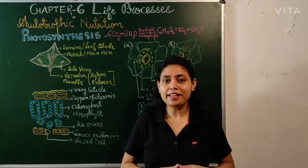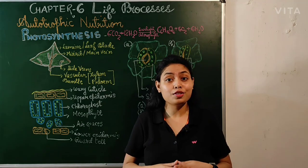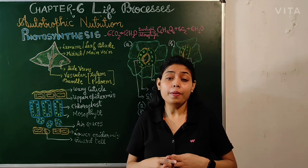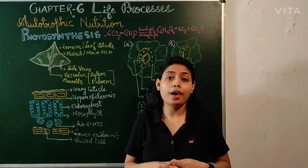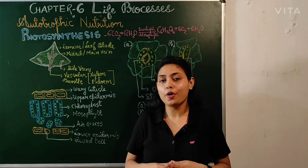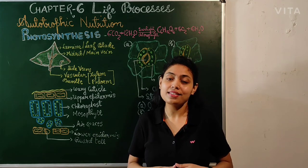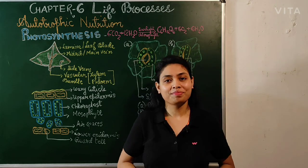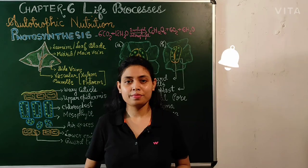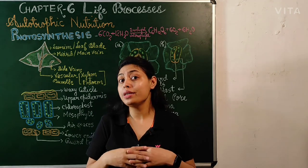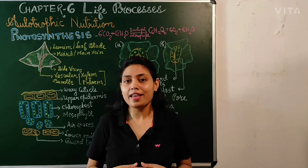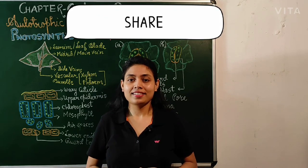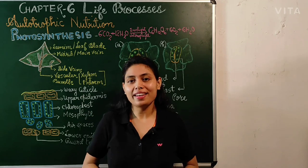Now I am revealing the answer to the question I asked at the beginning of the video. The question was: green plants or autotrophs, those who can prepare their own food, are known as dash. And the answer is producers. If your answer was correct, well done! If you want me to make more videos like this, don't forget to like the video and subscribe to my channel. Thank you and bye-bye — see you in my next class.